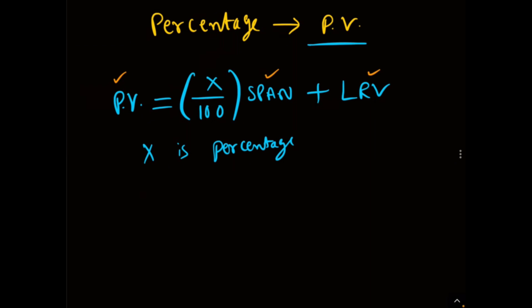PV is nothing but the process variable, or the physical quantity which you are going to measure. For example, if you are using a pressure transmitter, you are measuring pressure — so the process variable is pressure. Similarly, for a flow transmitter the process variable is flow, and for a level transmitter the process variable is level.